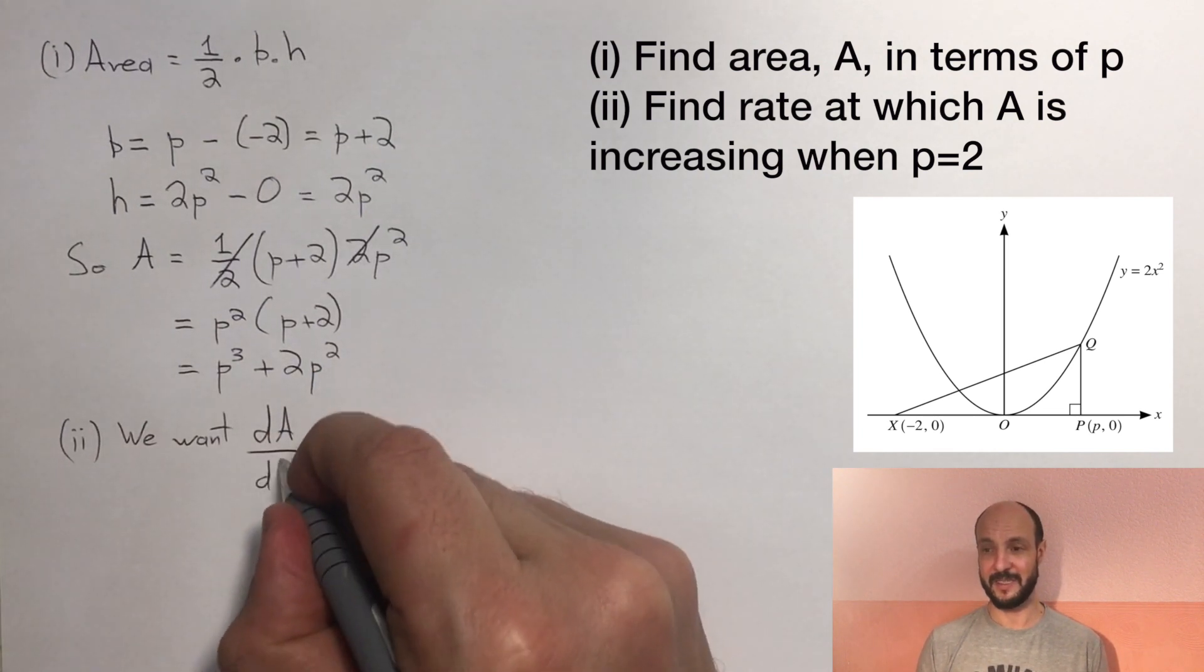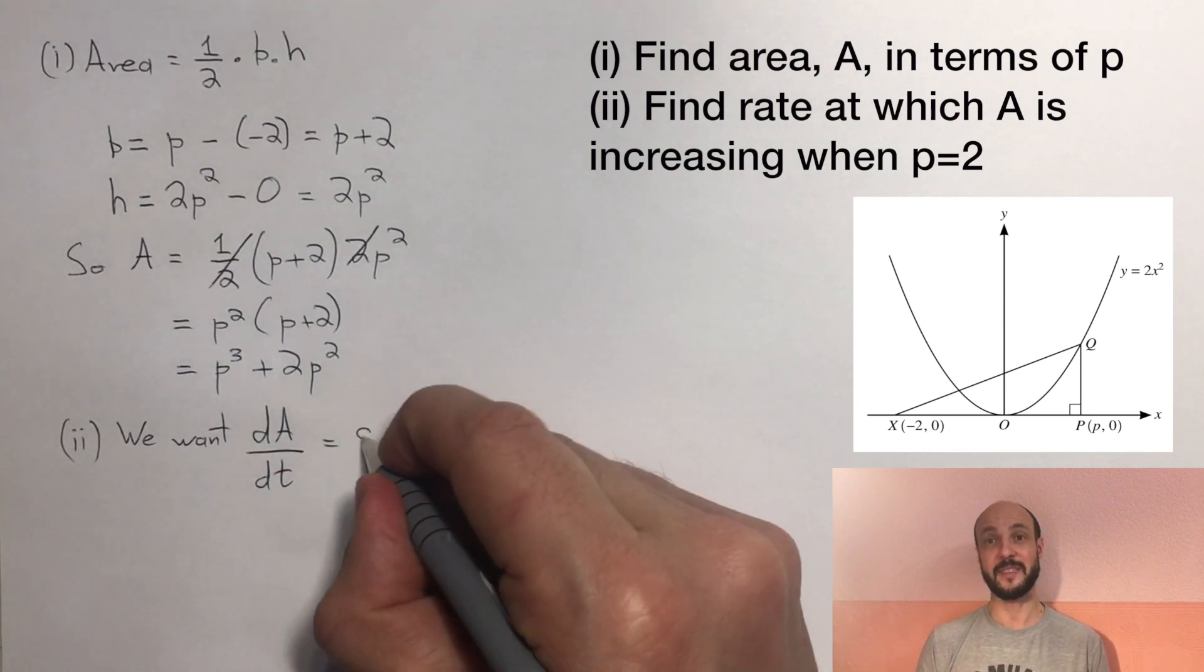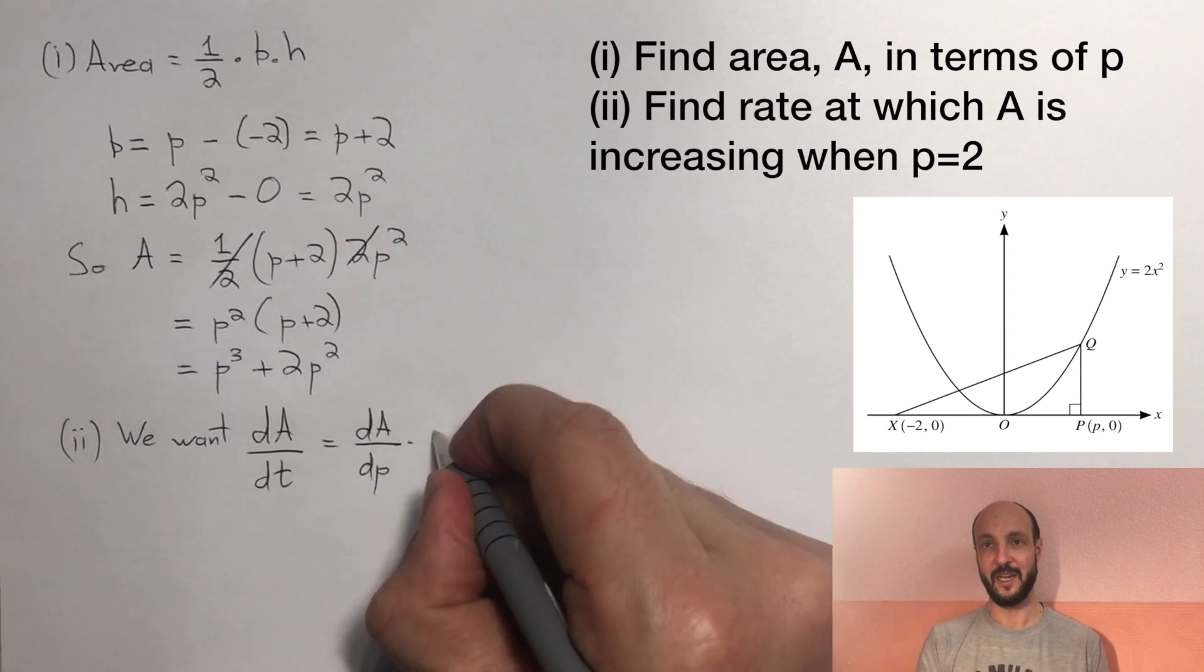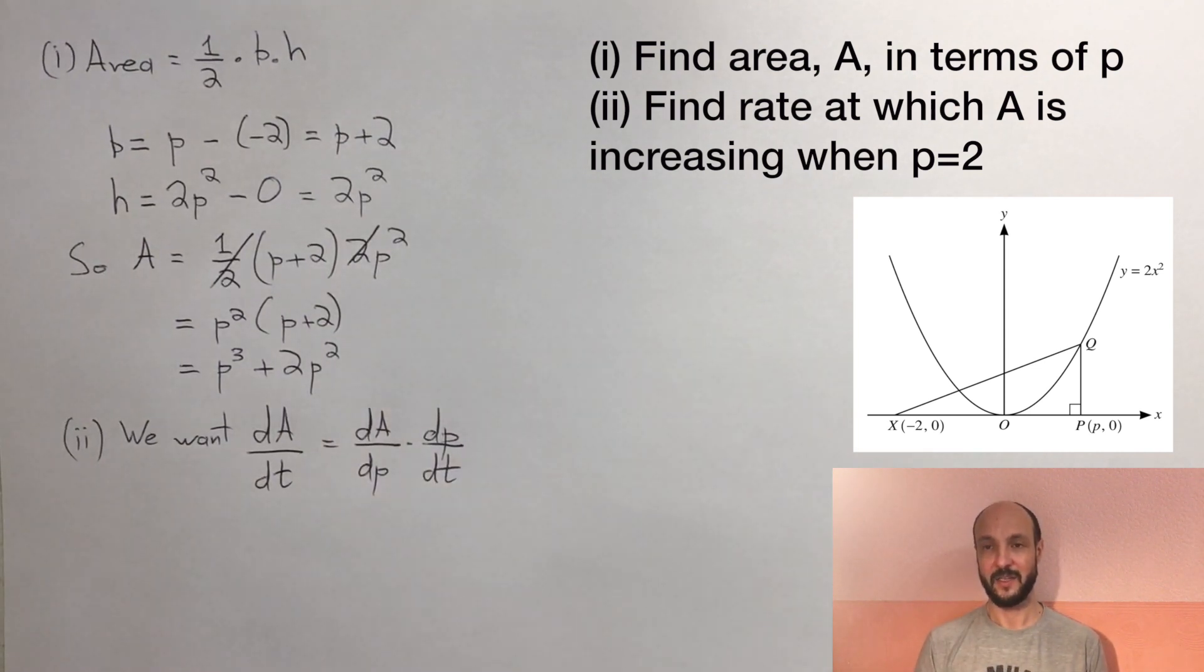First, we consider the change in A as p increases, and then we consider the change in p over time because p is what's actually on our graph going across the x-axis here. So how does the area change as p increases?